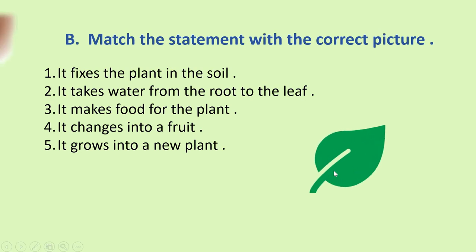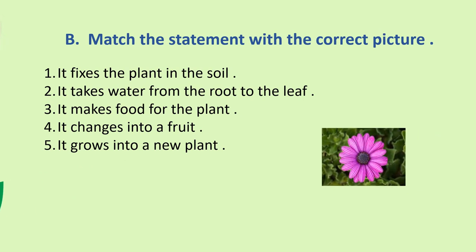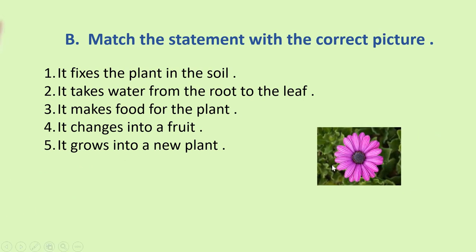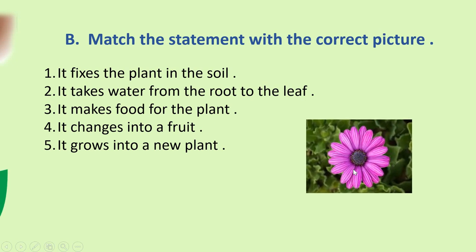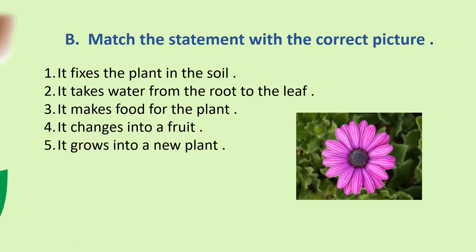Yes, you see leaf here? This makes the food for the plant. It is called the factory of plant. Okay, food factory. Now, number 4, it changes into a fruit. The answer is, the correct picture is flower. This is the correct answer. Flower changes into a fruit.